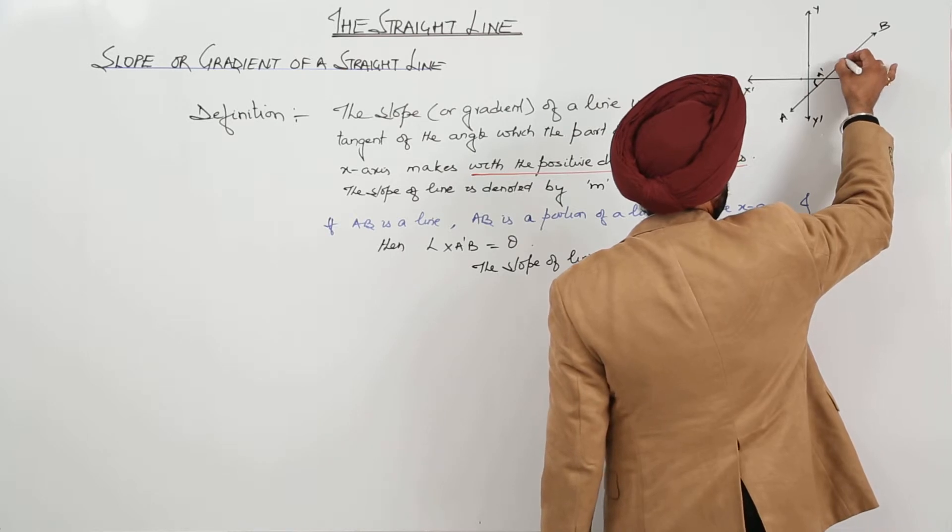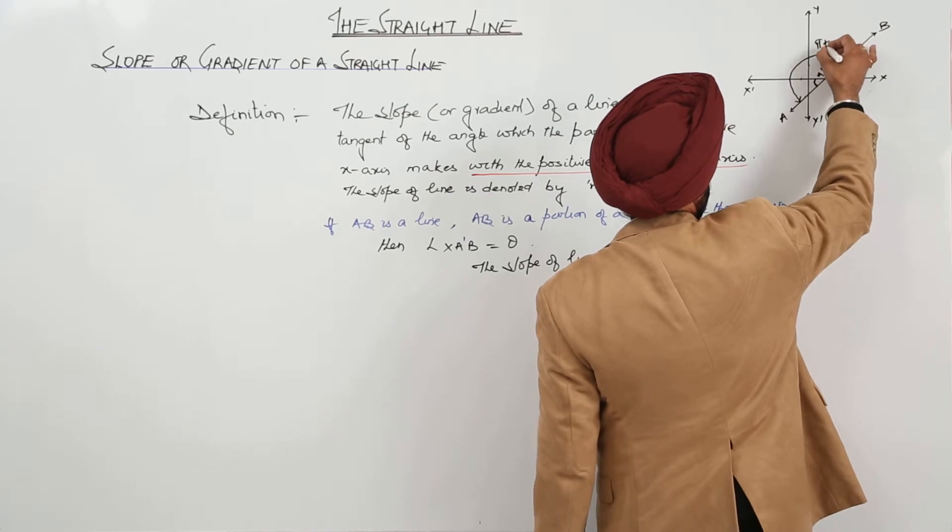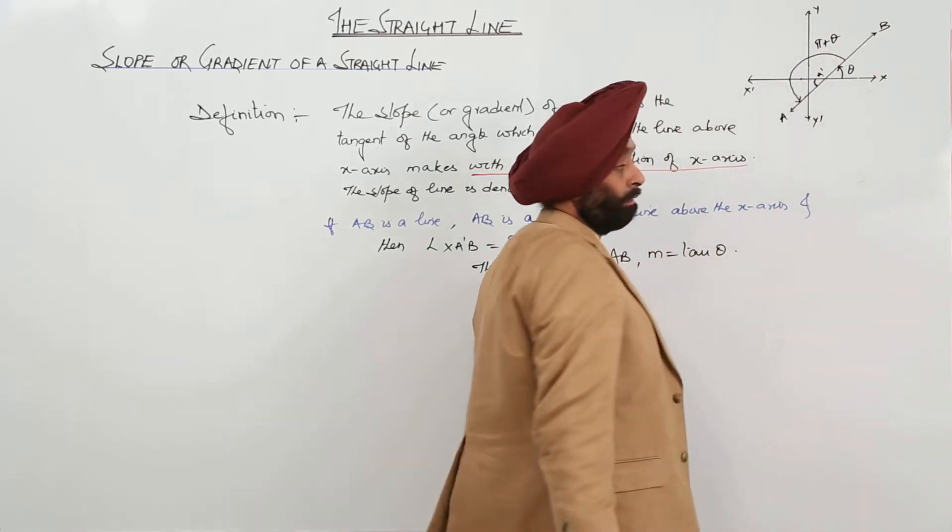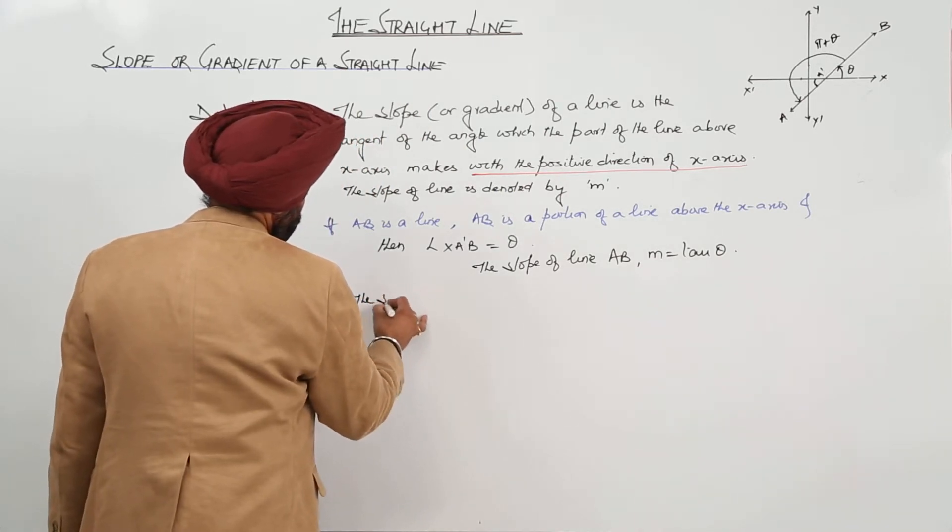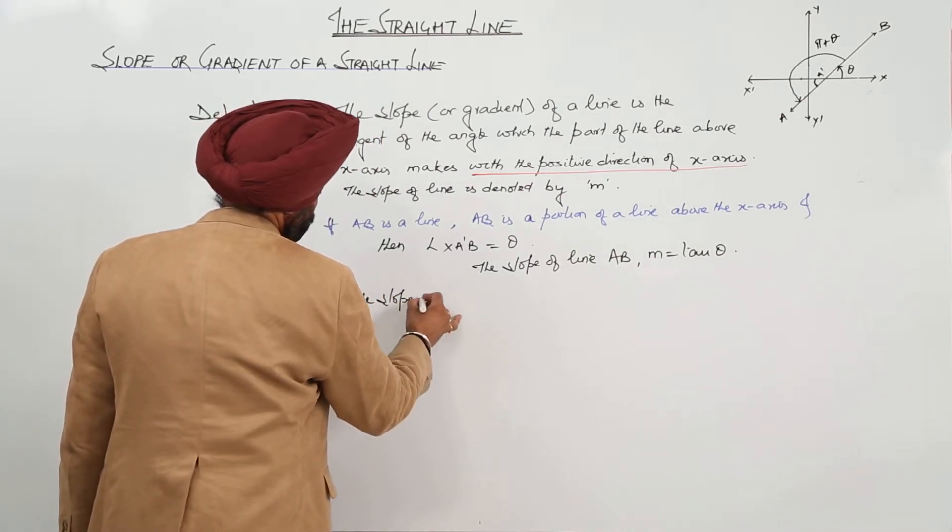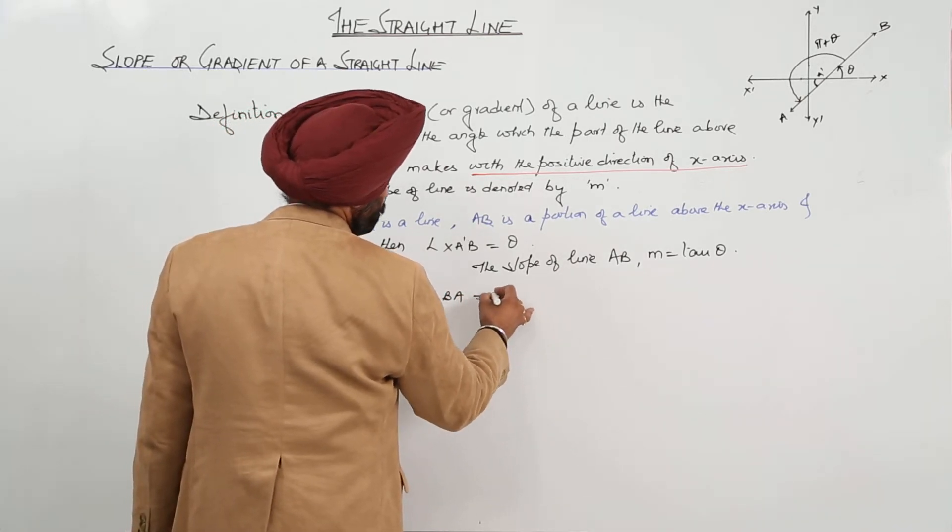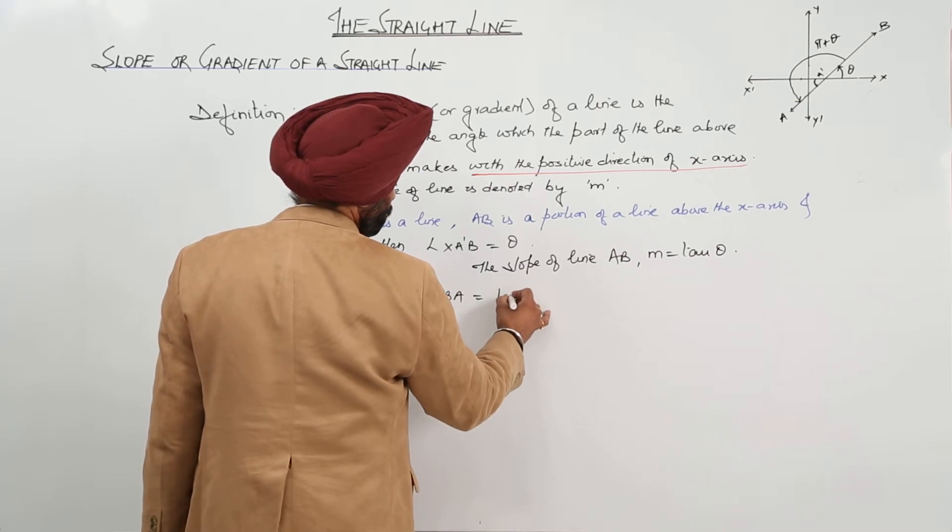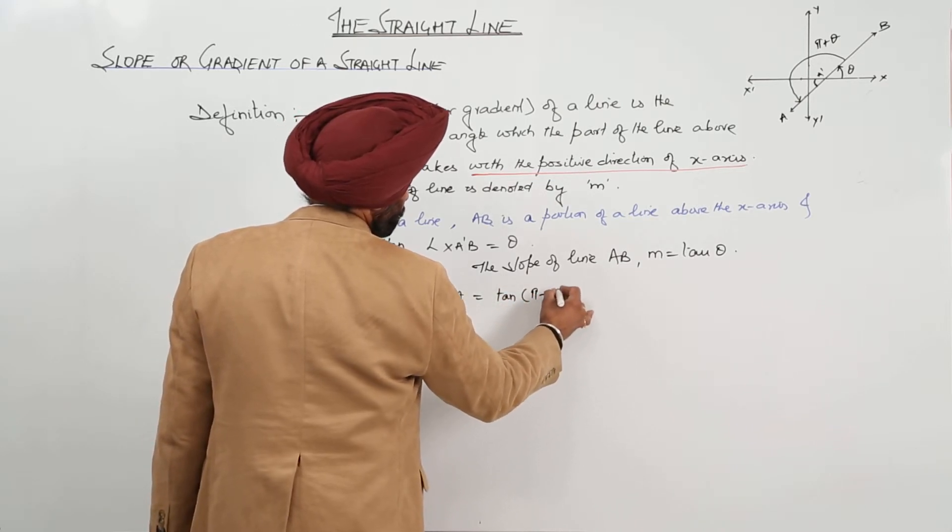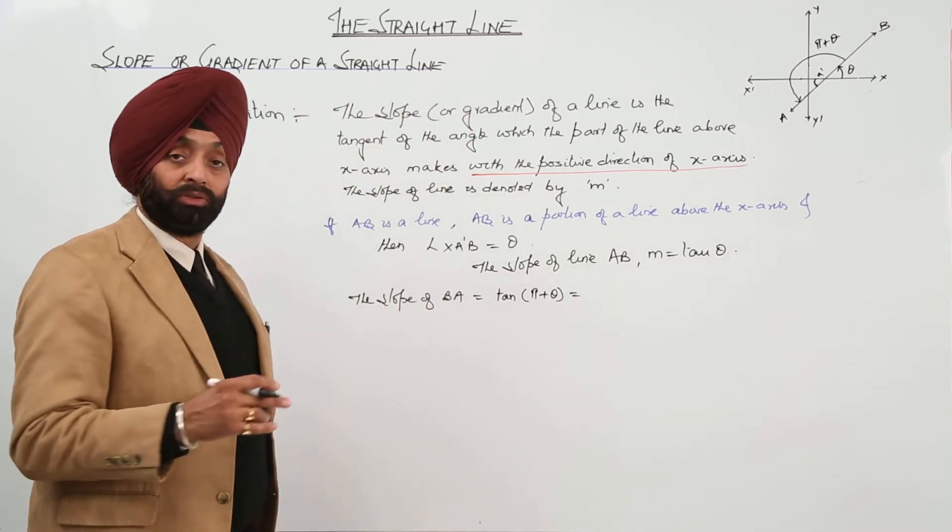So, now, from here to here, what is it? Pi plus theta. So, we can write: the slope of BA is equal to tan of pi plus theta. And pi plus theta, we have gone through the trigonometry.